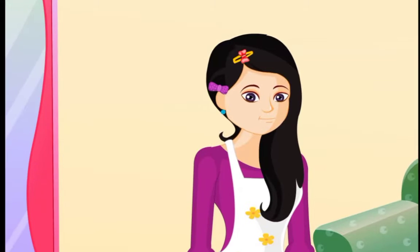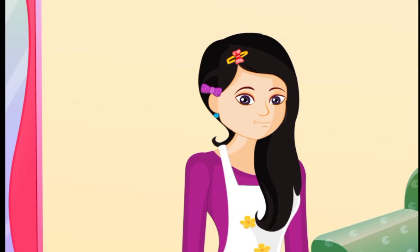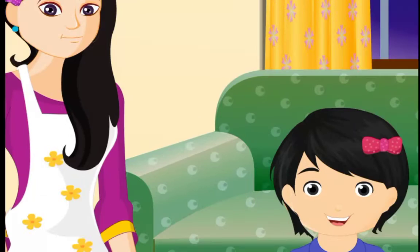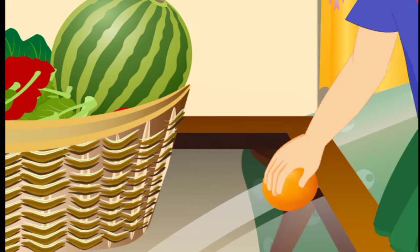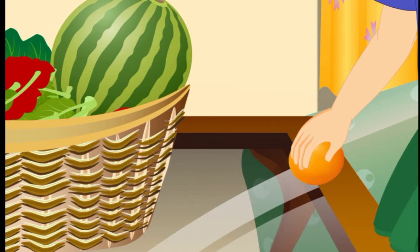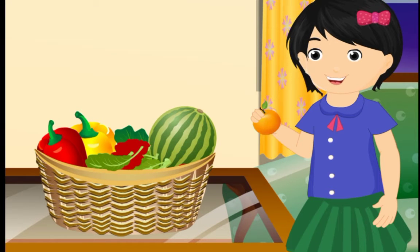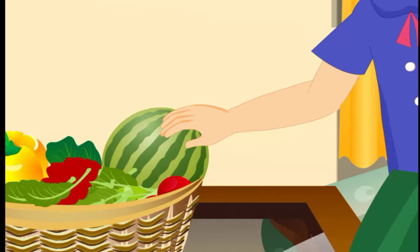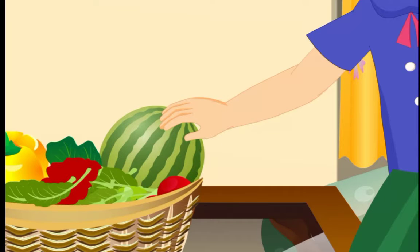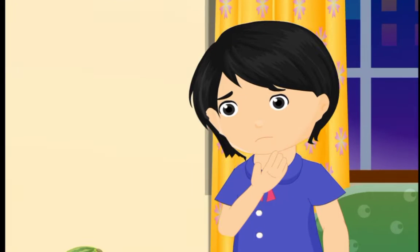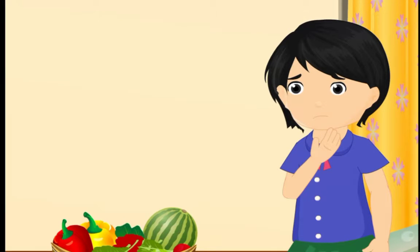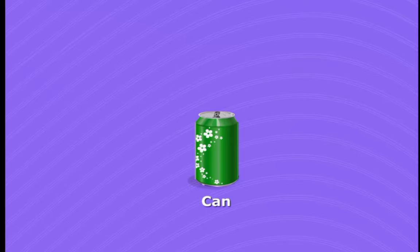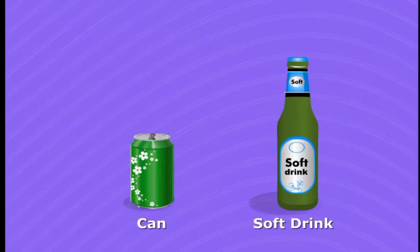Radha's mother has got such long hair, but Radha has short hair. It is easy for us to lift or pick up an orange as it is light. But picking up a watermelon can be a tough job for children as the watermelon is heavy. A can of soft drink contains less drink while a bottle carries more of the drink.